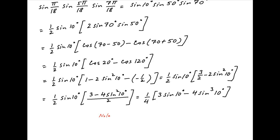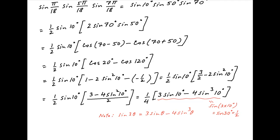Now recall that sine of 3 theta is equal to 3 times sine theta minus 4 times sine cube theta. Put theta equal to 10 degrees and note that the right hand side is equal to the expression in the square brackets above, which is therefore equal to sine of 30 degrees, which is equal to half. Plugging in this result, the value of the given expression is equal to 1 upon 4 times half, which is equal to 1 upon 8.